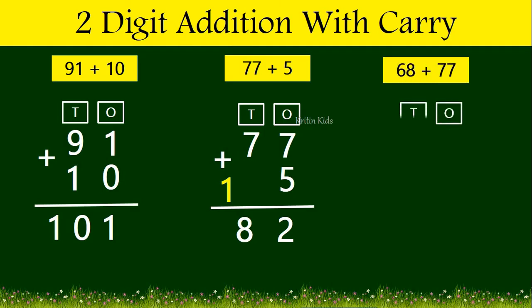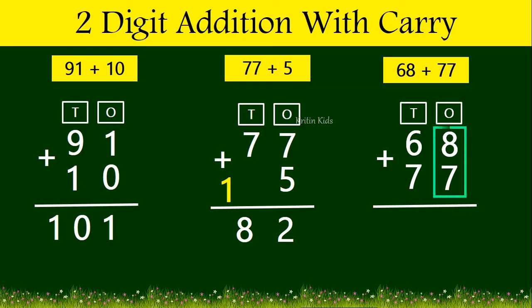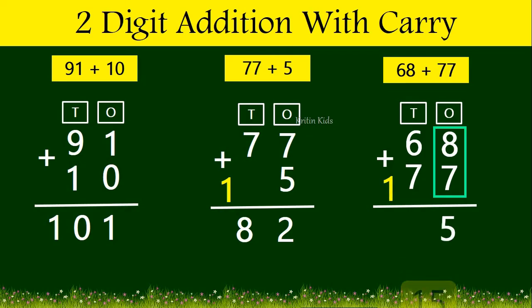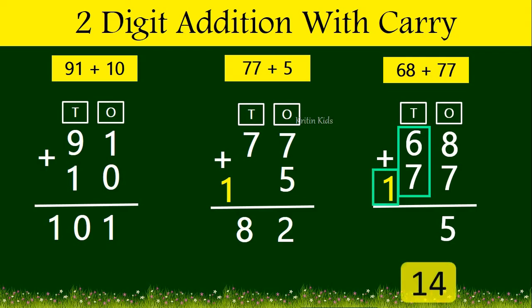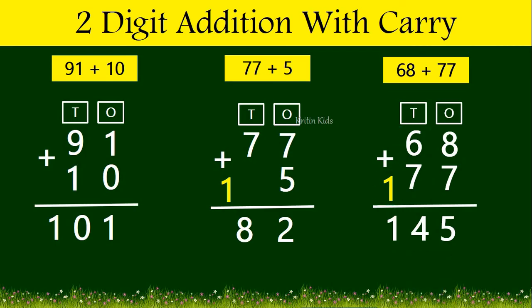Here it is 68 plus 77. We need to add numbers at the ones position: 8 plus 7 gives us 15. We will write 5 at the ones position and carry forward 1. Now we should add numbers at the tens position: 6 plus 7 plus 1 carry gives us 14. So 68 plus 77 gives us 145.